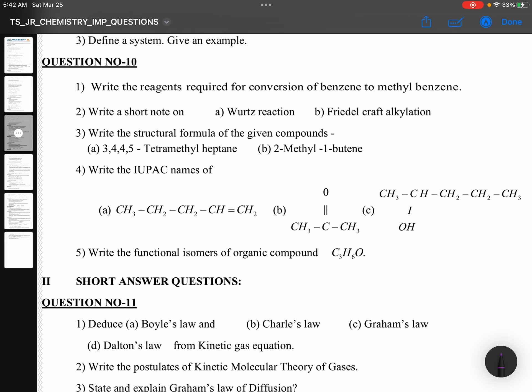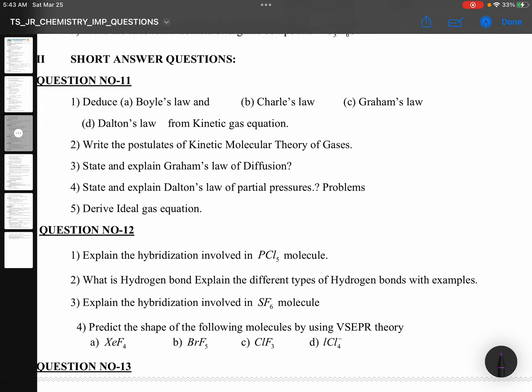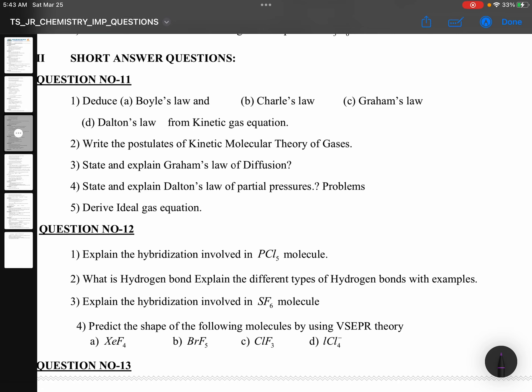Write the reagents used for the conversion of benzene to methyl benzene. Write a short note on Friedel-Craft alkylation. Write the structural formula of the given compounds. Write the IUPAC names of compounds and isomers of C3H6O. Short answer questions. So these are for four marks.